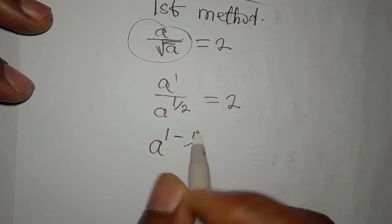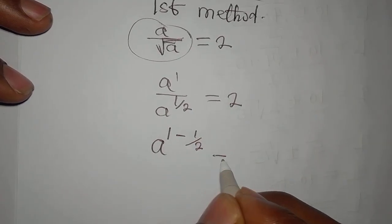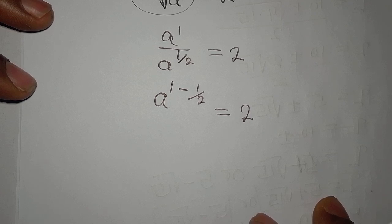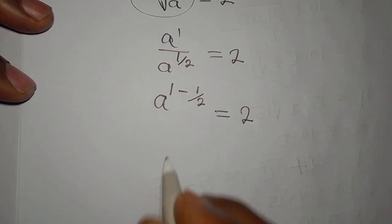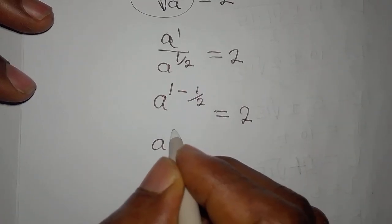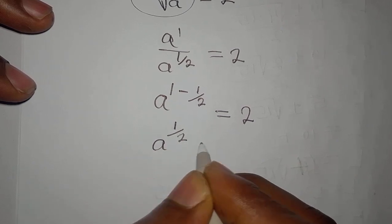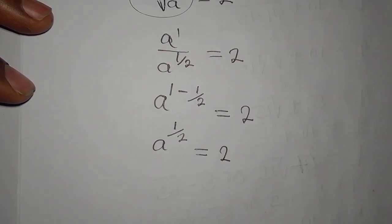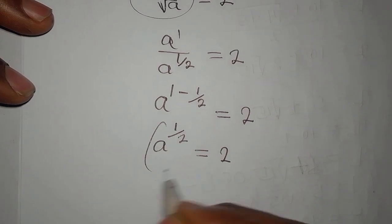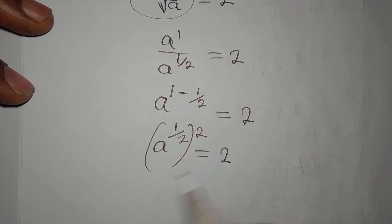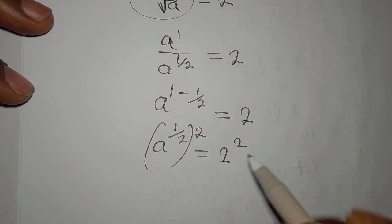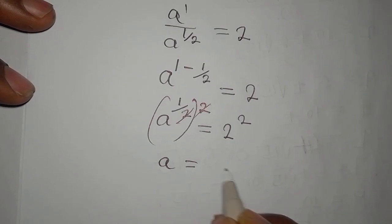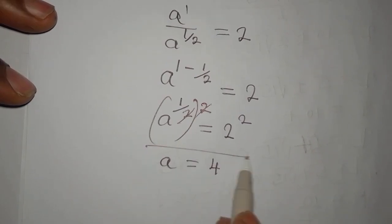And 1 minus 1/2 will give us 1/2, so a to the power of 1/2 equals 2. And then if I'm going to eliminate this power, I need to square this again. Then I'll square the other side so that this will go, and then a equals 4. This is the solution.